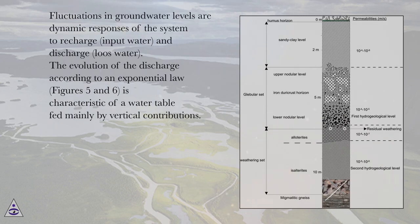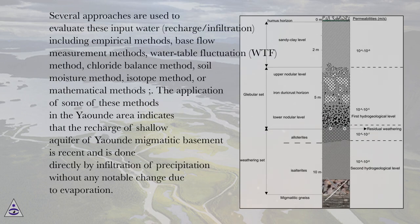Fluctuations in groundwater levels are dynamic responses of the system to recharge (input water) and discharge (loss of water). The evolution of discharge according to an exponential law, as shown in figures 5 and 6, is characteristic of a water table fed mainly by vertical contributions. Several approaches are used to evaluate input water (recharge/infiltration), including empirical methods, base flow measurement methods, water table fluctuation (WTF) method, chloride balance method, soil moisture method, isotope method, and mathematical methods.